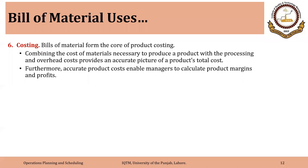Bill of material forms the core of product costing. Combining the cost of material necessary to produce a product with processing and overhead costs provides an accurate picture of a product's total cost. There are at least three components: direct labor cost, direct material cost, and overhead cost. Accurate product costs enable managers to calculate product margins and profits.